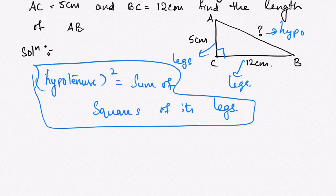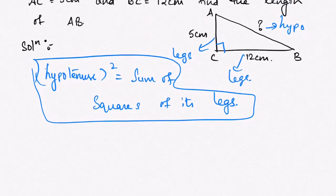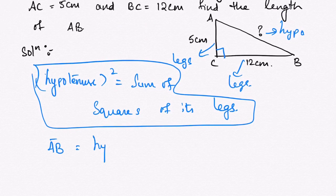Now let us apply this for the problem given here. What is the hypotenuse first? AB is hypotenuse, which we have to find.